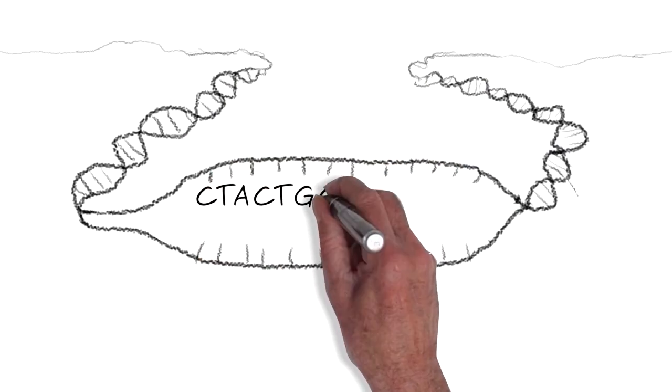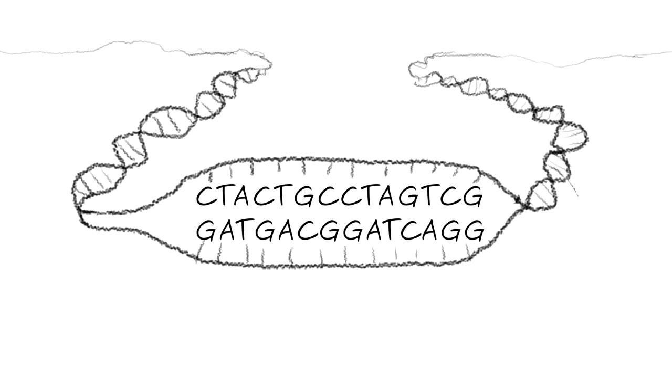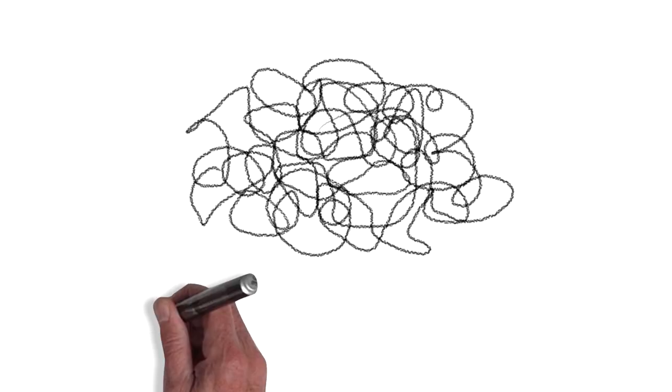With billions of letters making up each person's manual of instructions, our DNA is huge and is coiled up to fit inside every cell in our body.